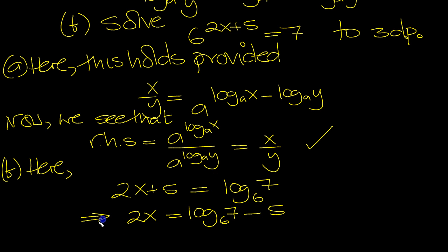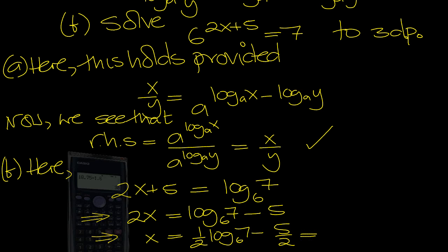And so that tells us then that x is equal to, divide by 2 all the way through, a half, log 6 of 7 minus 5 over 2. So we're working this out to 3dp, so let's get the calculator then.